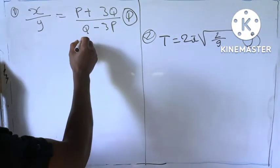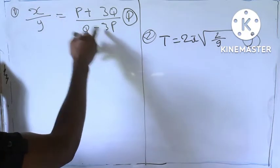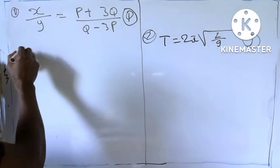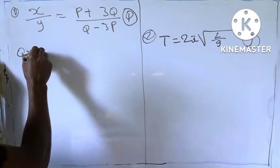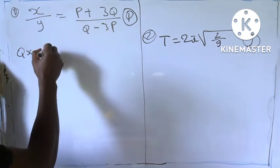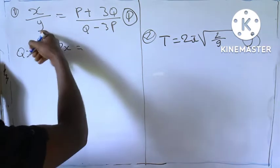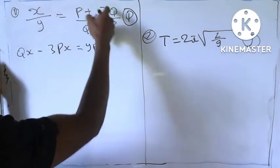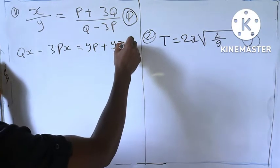So let's start from this one. Solution: Let's use x to multiply this one and use one to multiply this one. So q times x, we have qx minus x times 3p, so 3px equal to yp, and this one we have y times 3q.